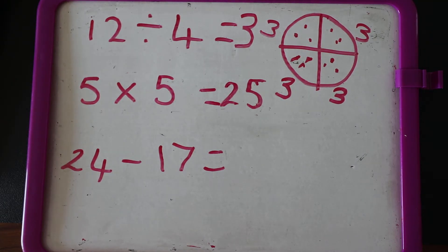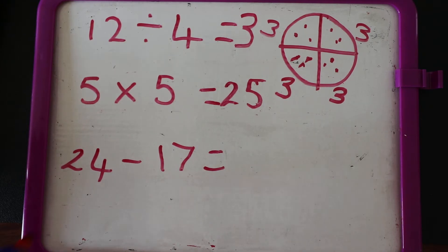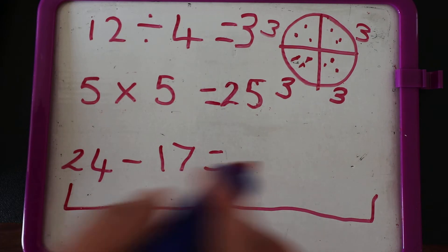So what I'm going to do is I am going to, what should we do? I'm going to number line. I'm going to do 24 here at the end and I'm going to count back 17.